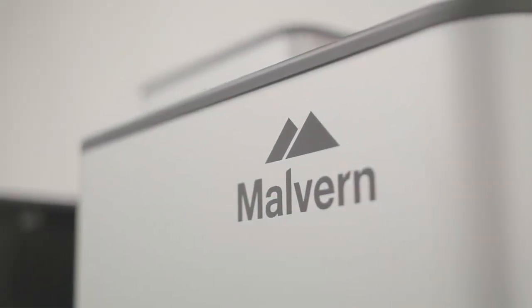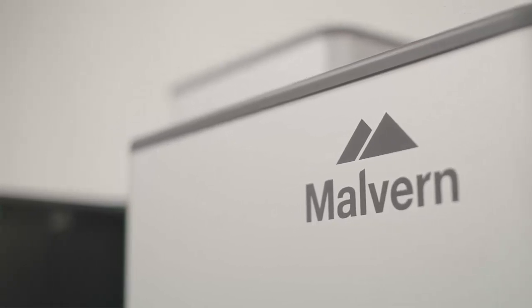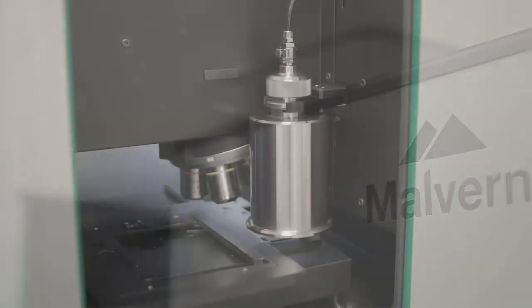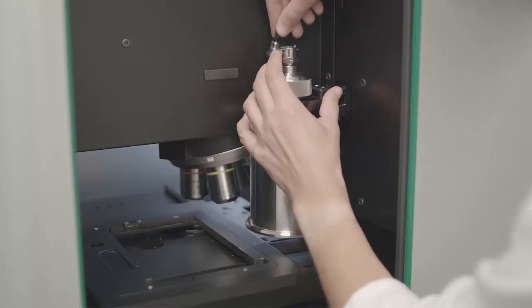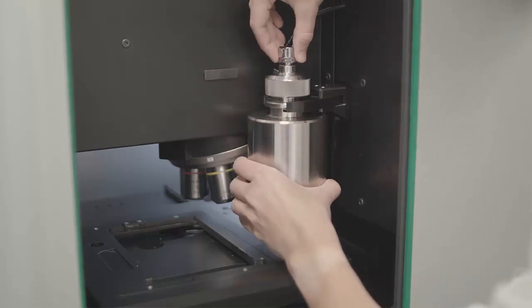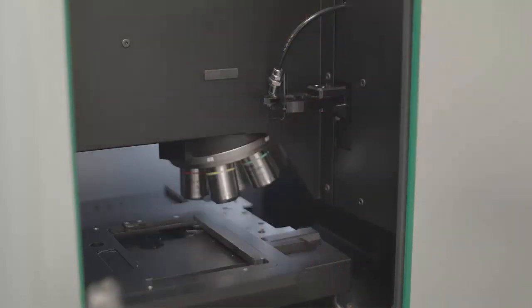The Morphology 4 measures particle size and shape by automated image analysis. Dry powders, such as metal powders, can be dispersed using the compressed air driven integrated sample dispersion unit, or SDU.